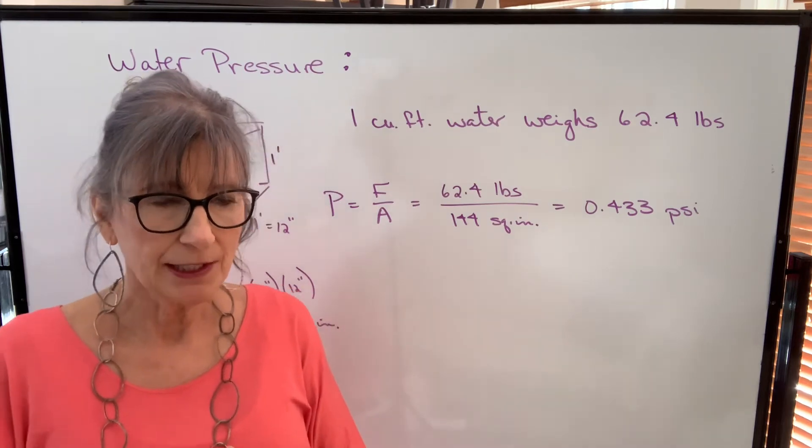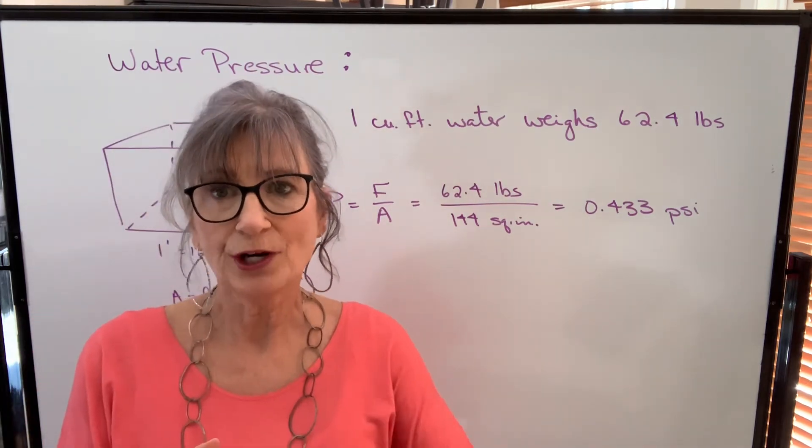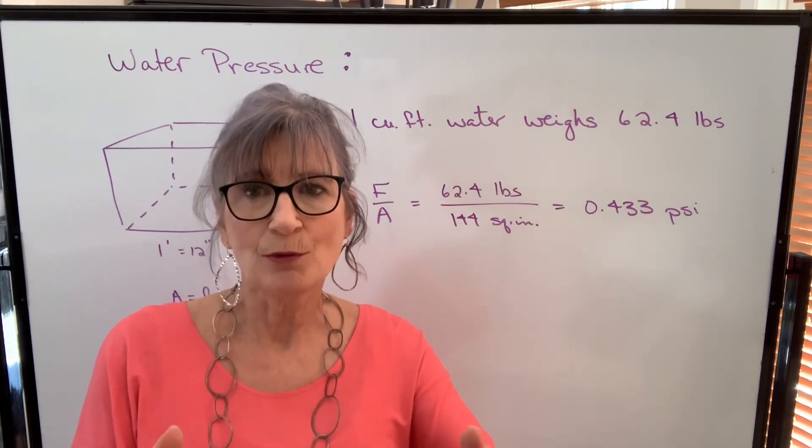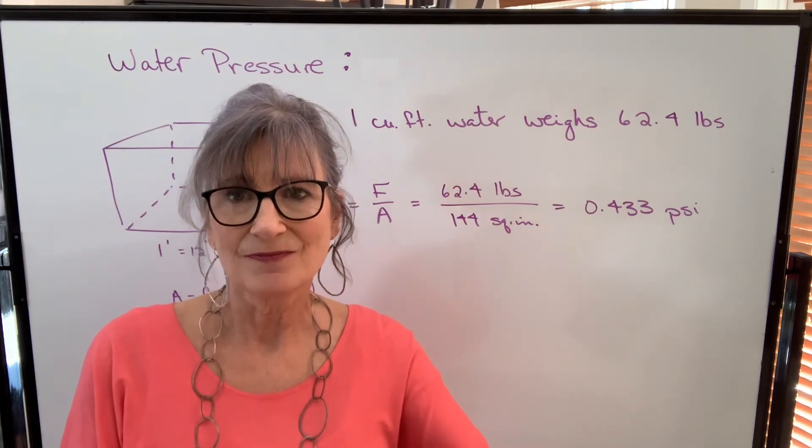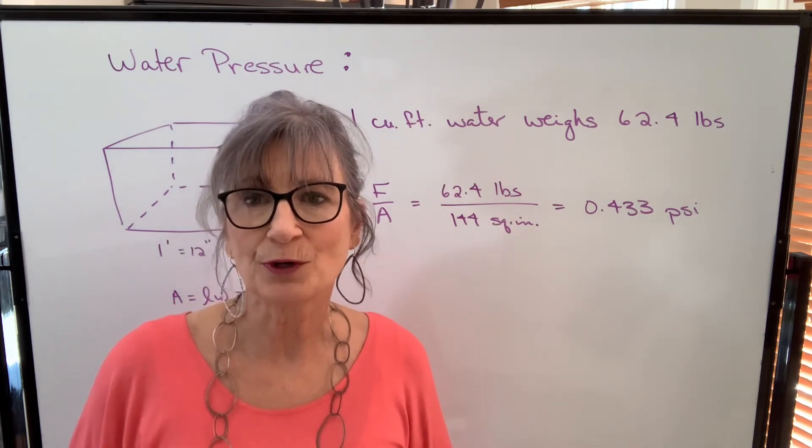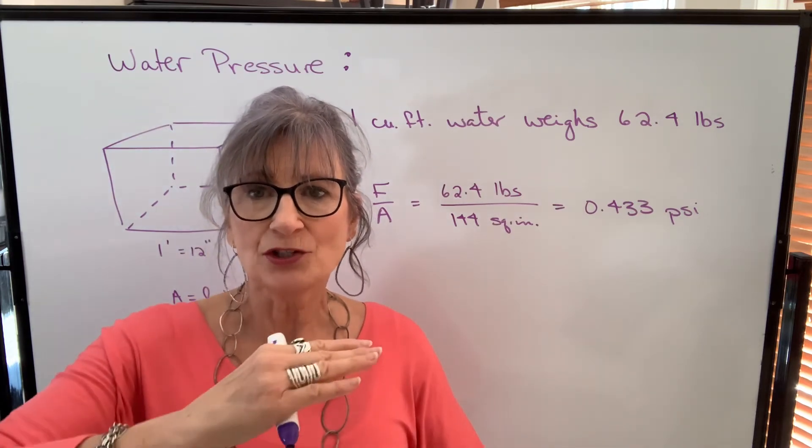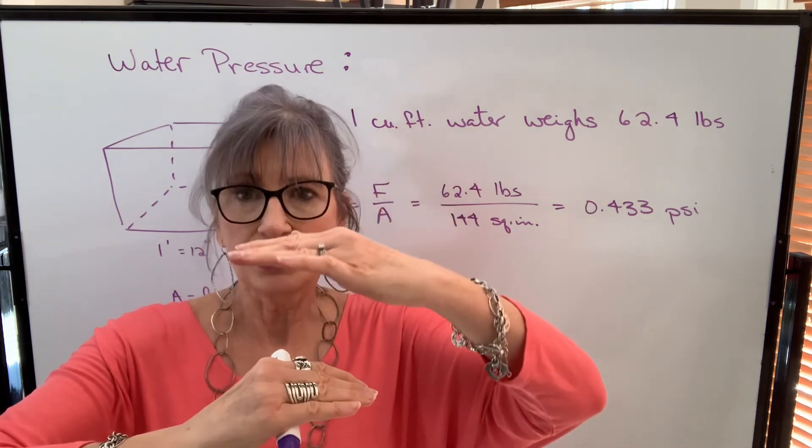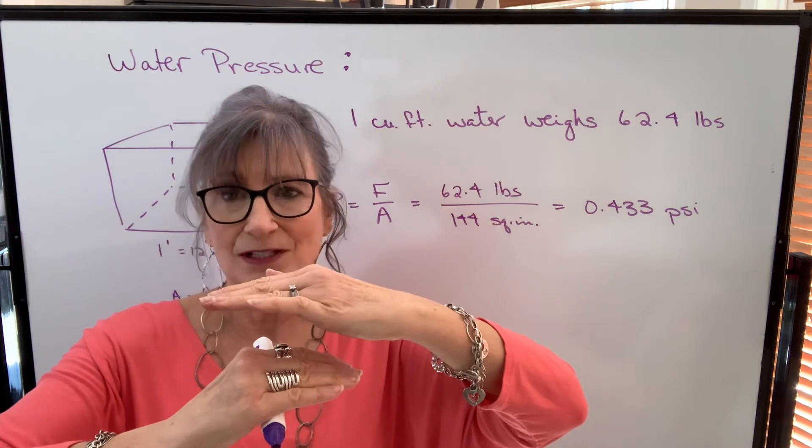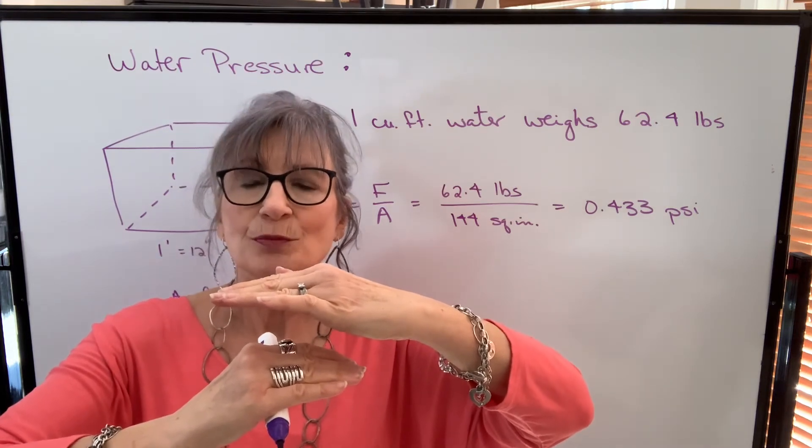Now if I took another cubic foot of water and put it beside this one, I'm doubling the weight or the force but I'm also doubling the area. So the pressure on the base would still be 0.433 pounds per square inch. But if I took a cubic foot of water and put it on top of the other cubic foot of water, I've doubled the force but I haven't doubled the area, so the pressure would be double.